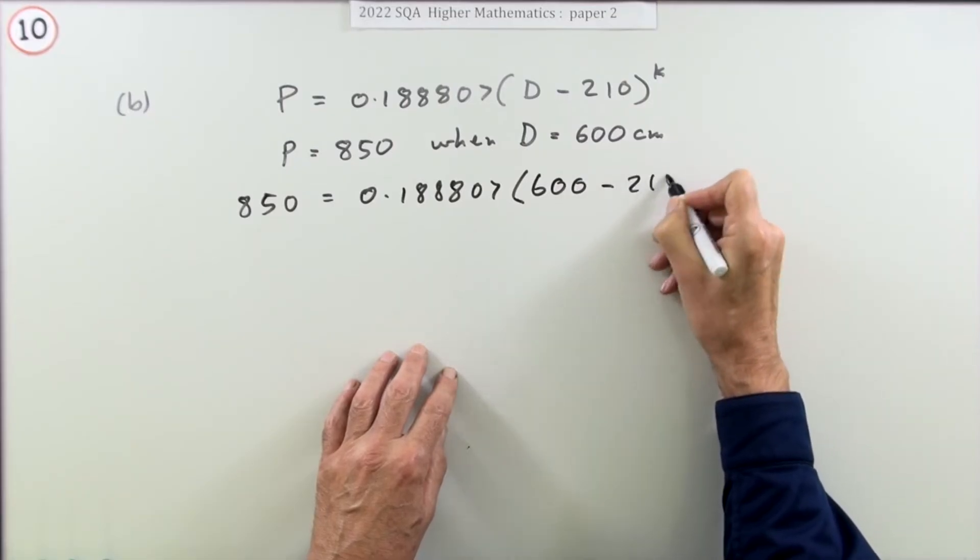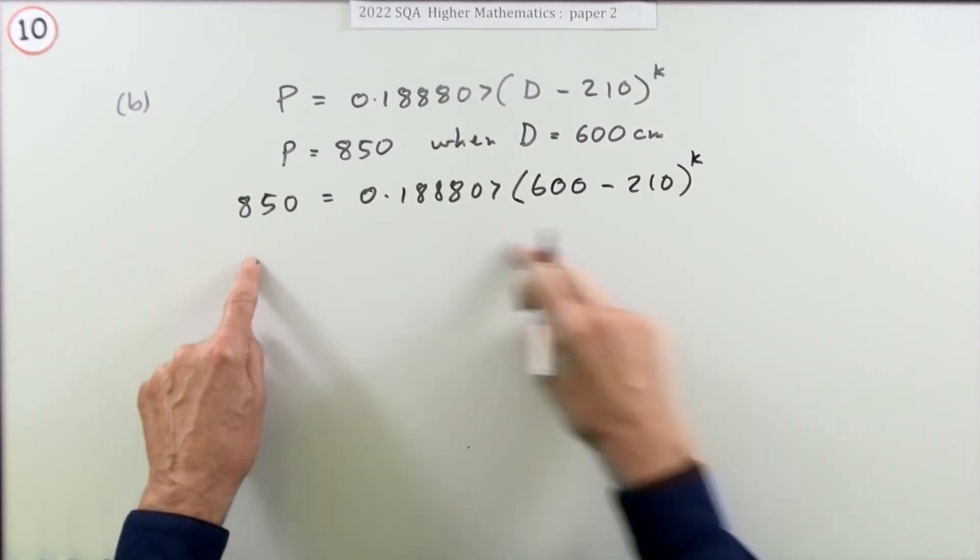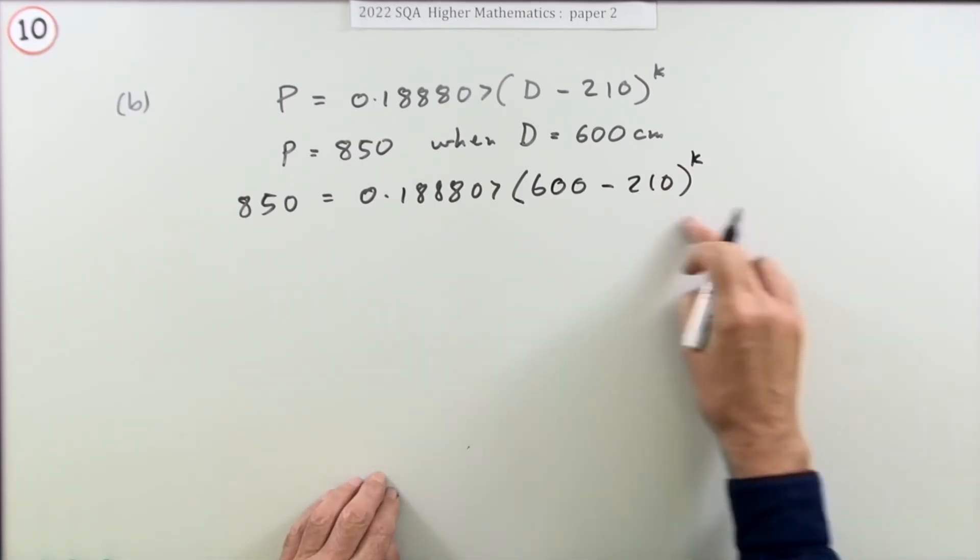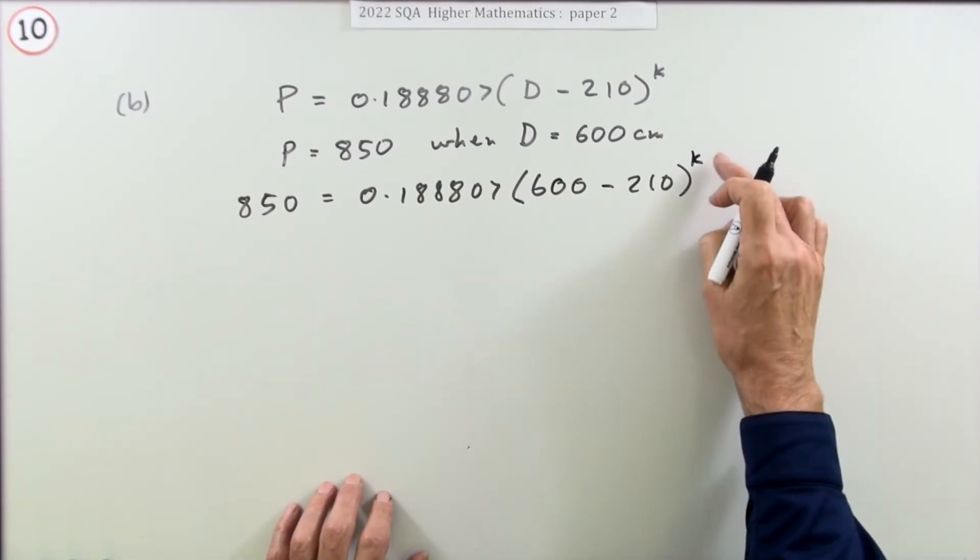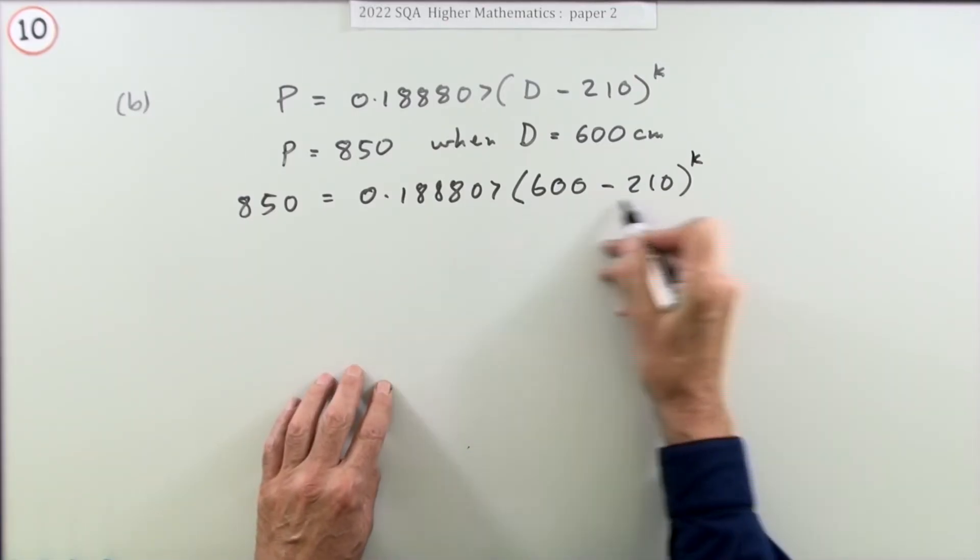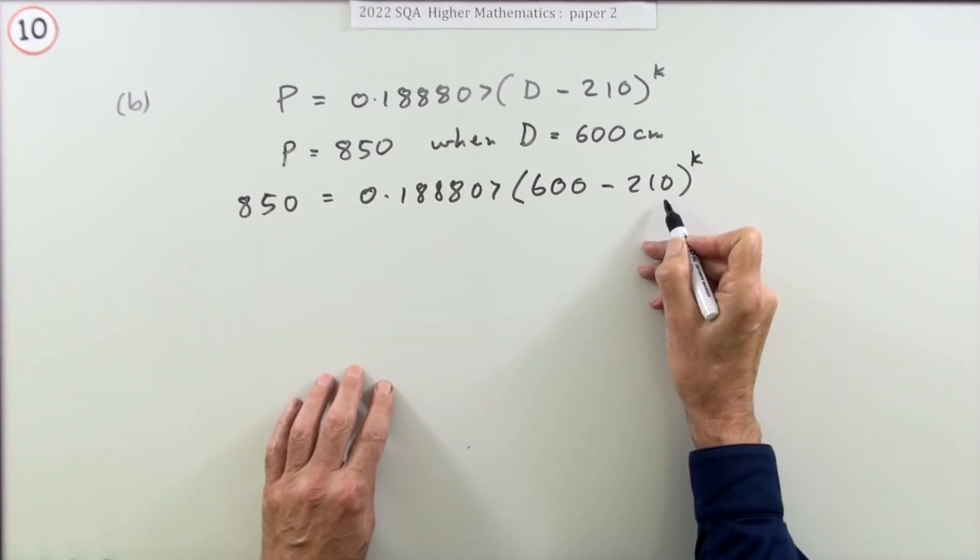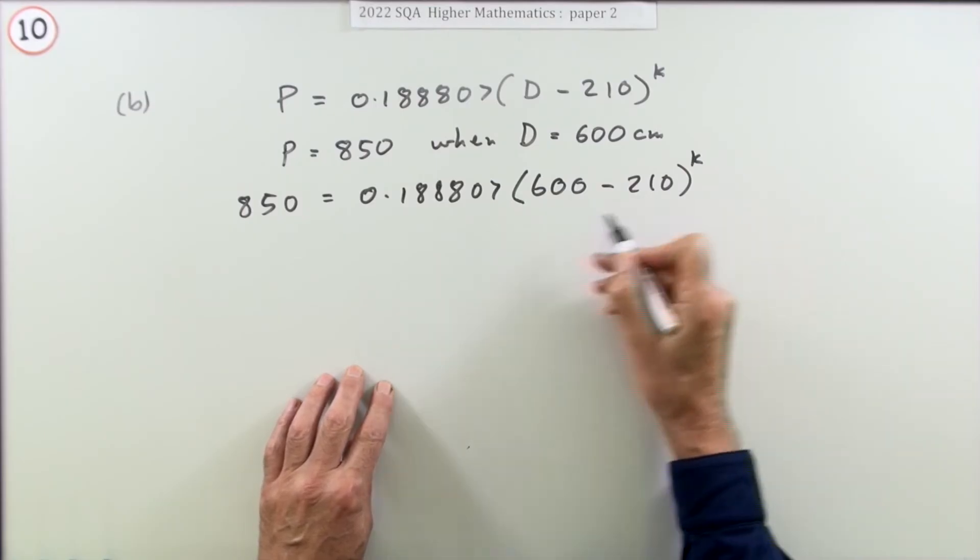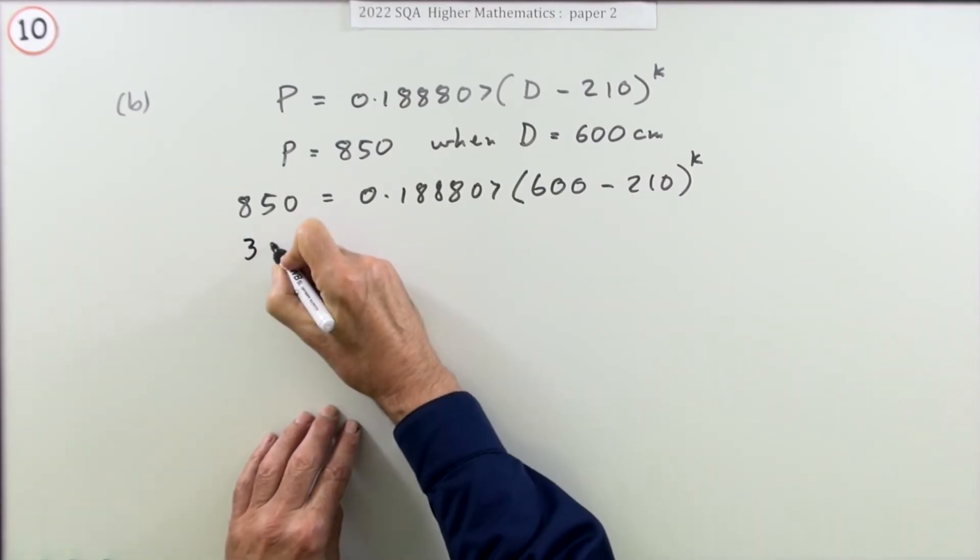There's only one thing you don't know. You've now got an exponential equation here with this exponent to find. We'll just rearrange it. You don't need to tidy this up—you could keep all the figures—but that's so easy you could just put that down.